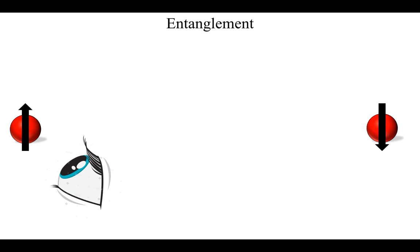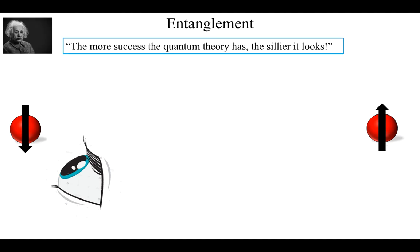If the spin of electron 1 is found to be up, then electron 2's state would become instantaneously down and no longer in a superposition of up and down. Similarly, when the first electron's spin is down, the spin of the second electron would be up instantaneously.